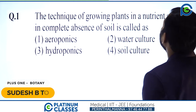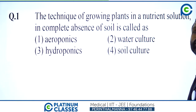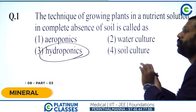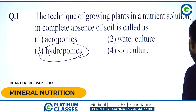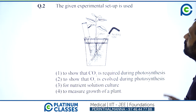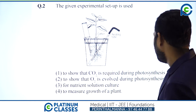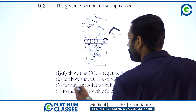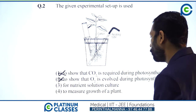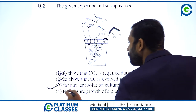The technique of growing plants in a nutrient solution in the complete absence of soil is called hydroponics. The given experimental setup is used to show that CO2 is required during photosynthesis. It can also show that oxygen is evolved during photosynthesis. Another use is for nutrient solution culture, or to measure the growth of a plant. The answer is option 3.